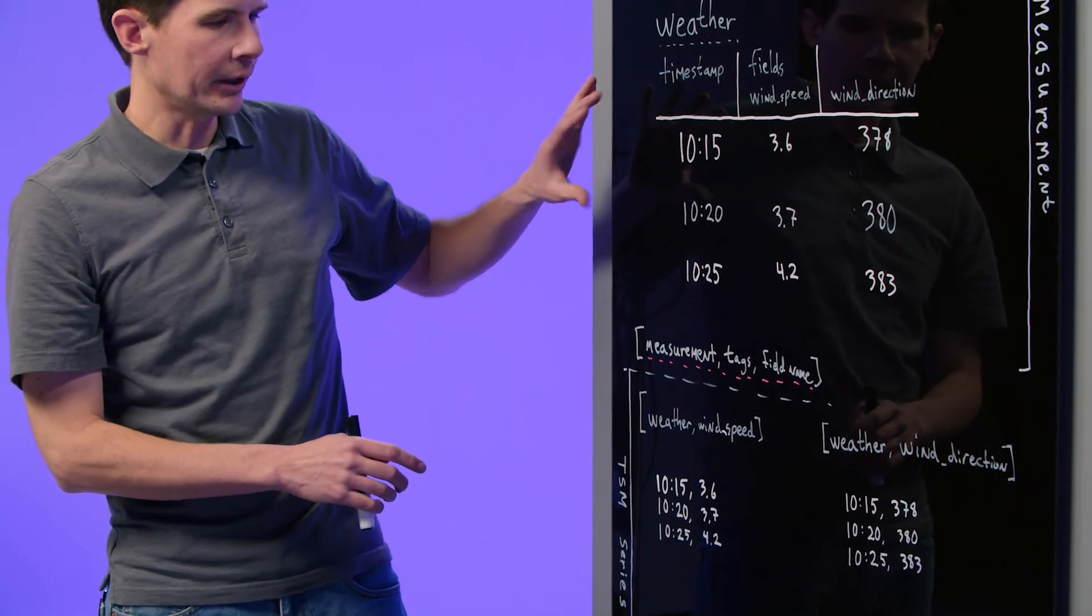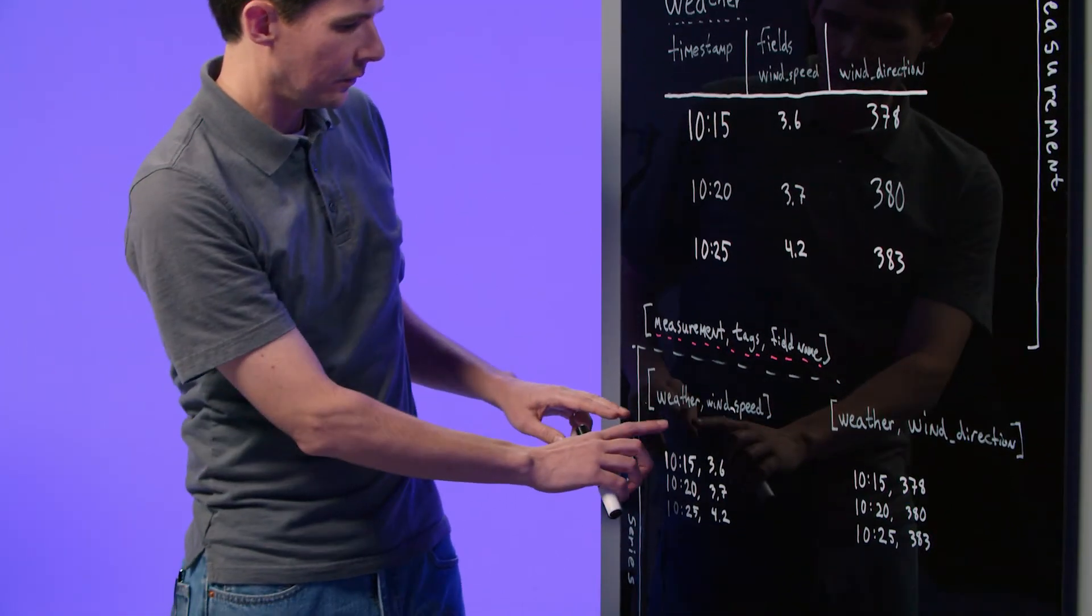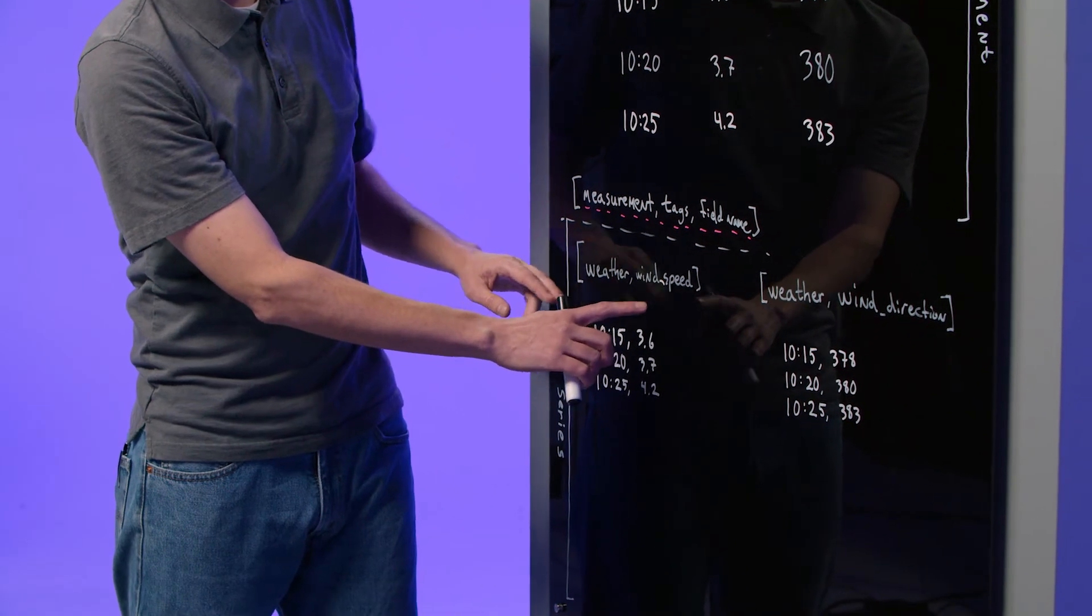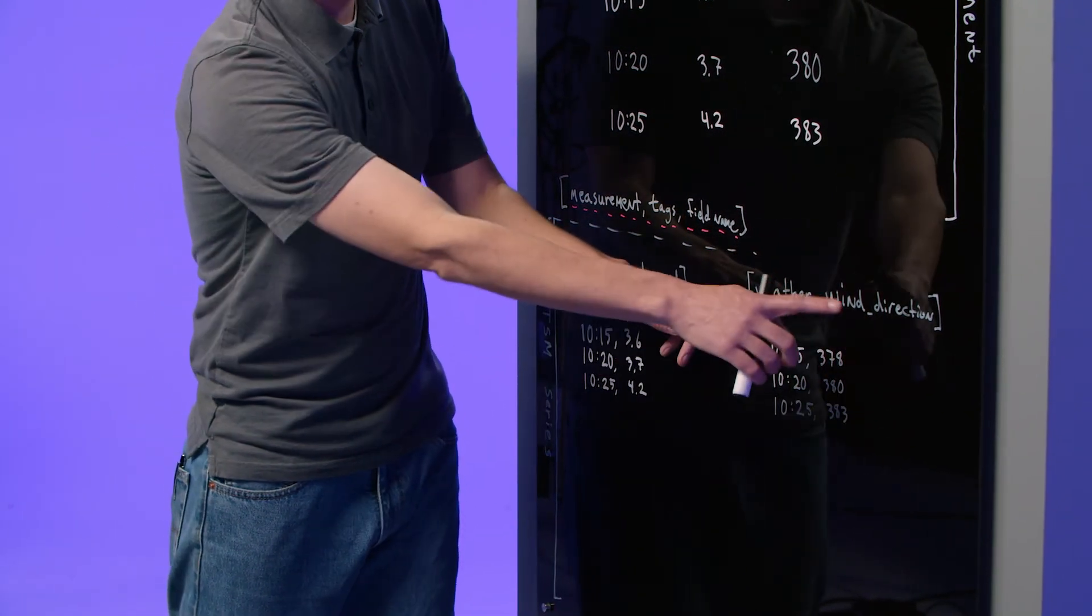So in this measurement, we find two series. This series: measurement weather, field wind speed, and this series: measurement weather, field wind direction.